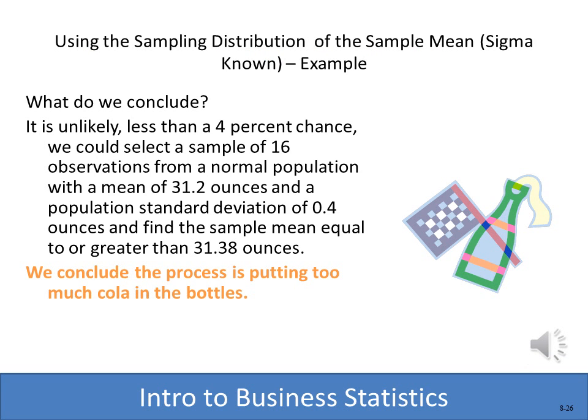The conclusion: it's unlikely — less than a 4% chance — that we would select 16 observations and get a mean as high as 31.38. This tells us the machine is probably broken and out of tolerance, putting too much cola in the bottles. There's a 96% chance the fill should be lower, and less than 4% chance it would be higher — so the machine is clearly out of tolerance.